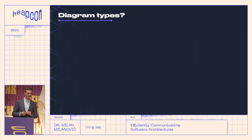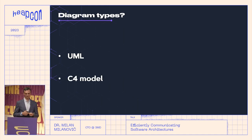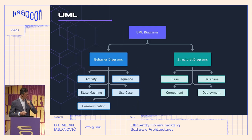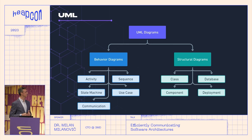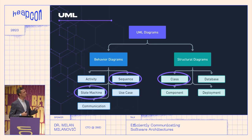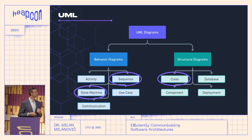When we talk about diagram types today, what I see are mostly two things: UML is still here, and of course the C4 model, which is a bit newer. UML is a pretty old specification — I think it has 800 pages. About 10 to 15 years ago we used it a lot, all types of diagrams. But today what I see is that we mostly use just three kinds: class, sequence, and state diagrams. I think this is probably the best of what we took from UML.